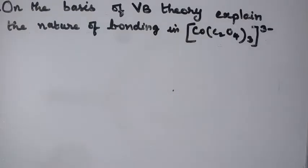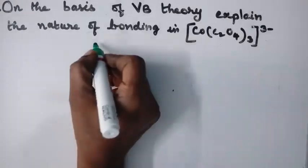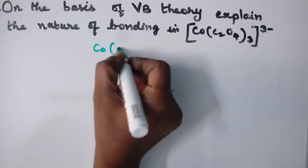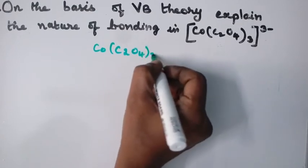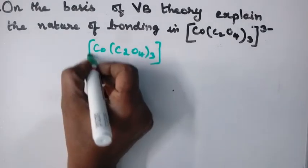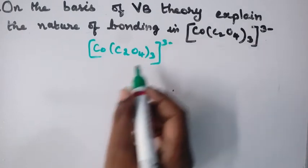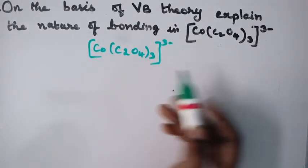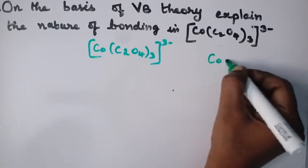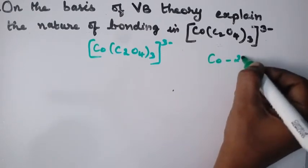Question number 23: On the basis of Valence Bond Theory, explain the nature of bonding in [Co(C₂O₄)₃]³⁻. The complex given is [Co(C₂O₄)₃]³⁻. Cobalt is the metal atom and oxalate is the ligand. For cobalt, the atomic number is 27.